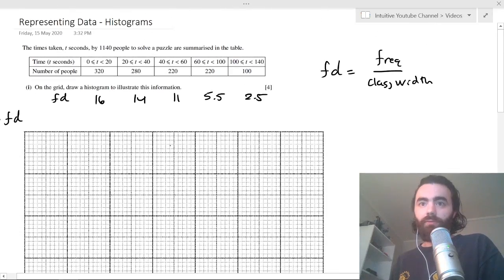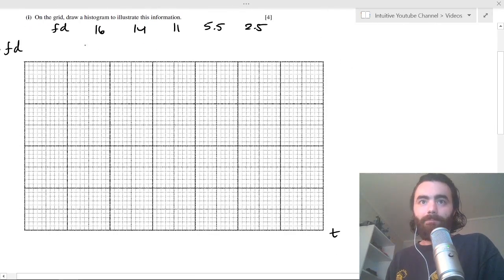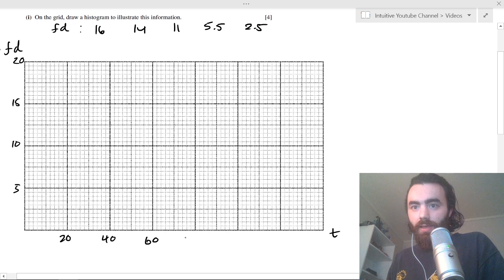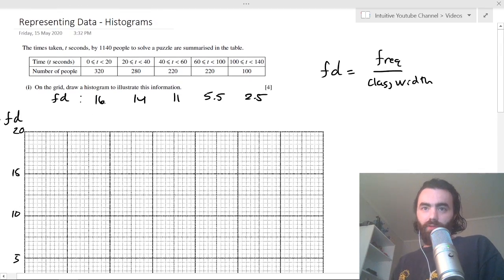So let's plot this stuff you have here. So let's plot on, this would be a good one, would be, let's say, 2.5, 5, 10, 15, 20 for the frequency densities. And then the class widths, well, 20 would be a great one, 20, 40, 60, 80, 100, 120, and then at the end, 140.